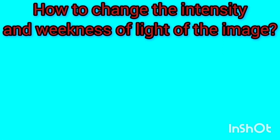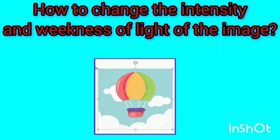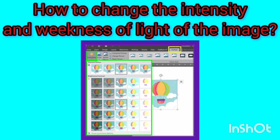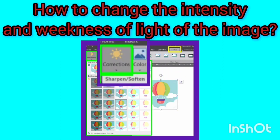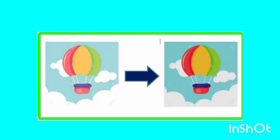We want to learn how to change the brightness and darkness of the image. Click on the image once to select it. Then the Format tab specified with the yellow box will be shown automatically. Click on the Corrections icon marked with a green box and change the brightness and darkness of the image as desired. What brightness setting did you choose for your picture? Write me in the comments.